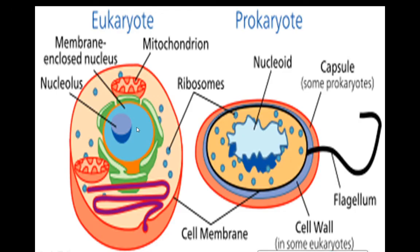There are two types of cells — the eukaryotic cell and the prokaryotic cell, which we will discuss later. Both of these cells have a cell membrane that gives shape to the cell. In some eukaryotic cells there is also a cell wall.